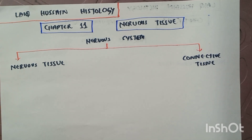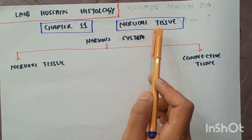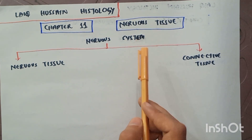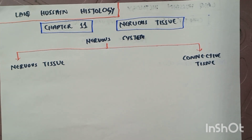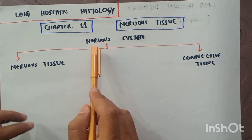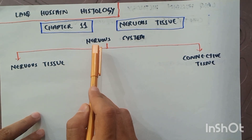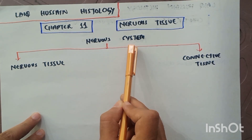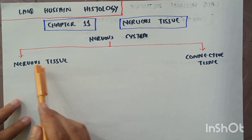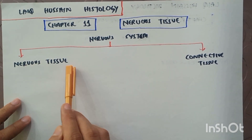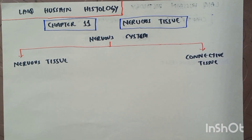Today we will be starting the Hussain histology, chapter number 11, which is the nervous tissue. This is the first lecture of chapter 11. The nervous system of the human body is made up of two types of tissues: number one is the nervous tissue, and number two is the connective tissue.